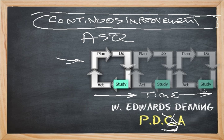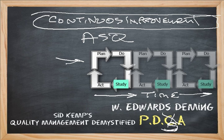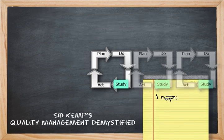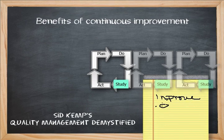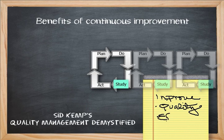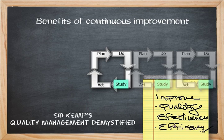What else is there to talk about on this very subject of continuous improvement? Plenty, I'd say. In Sid Kemp's Quality Management Demystified, there are several key benefits. First is to improve quality. Second is to improve effectiveness of the team and the work produced. And third is to improve efficiency, doing more with less, minimizing waste.